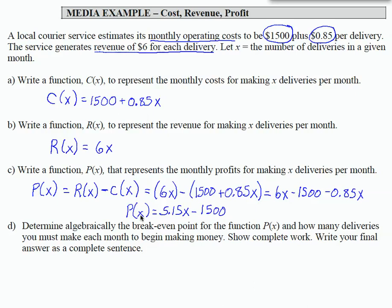Notice something about this function. If I make 0 deliveries, that would be illustrated by P of 0. What is my profit? How would I figure that out? Well, I would plug in 0 for X. So no deliveries means this 5.15 times 0 is 0, and I would just end up with negative $1,500.